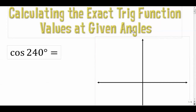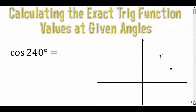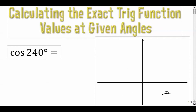In my previous two videos about the unit circle we focused primarily on the angles in quadrant one, or between zero and ninety degrees. Now we're going to extend that idea to quadrants two, three, and four. We're going to look at cosine, sine, tangent, cosecant, secant, and cotangent. The first example is 240 degrees.